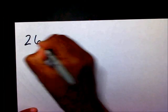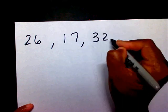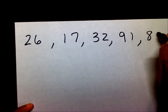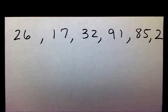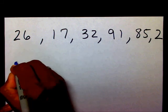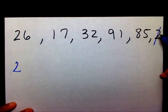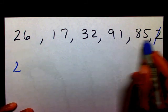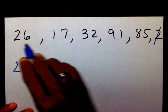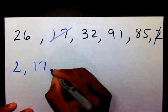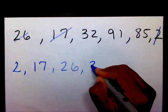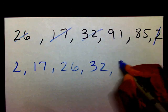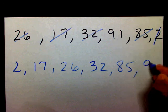Let's try another example: 26, 17, 32, 91, 85, and 2. Remember, the first thing you need to do is put the numbers in order from least to greatest. I like to cross out my numbers as I write them so I won't forget any. So: 2, 17, 26, 32, 85, and 91.